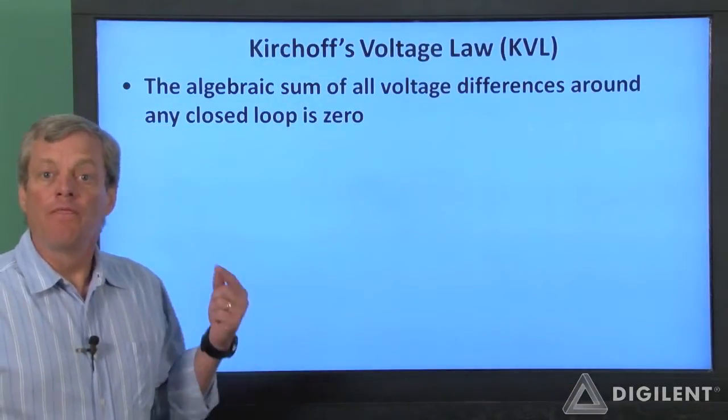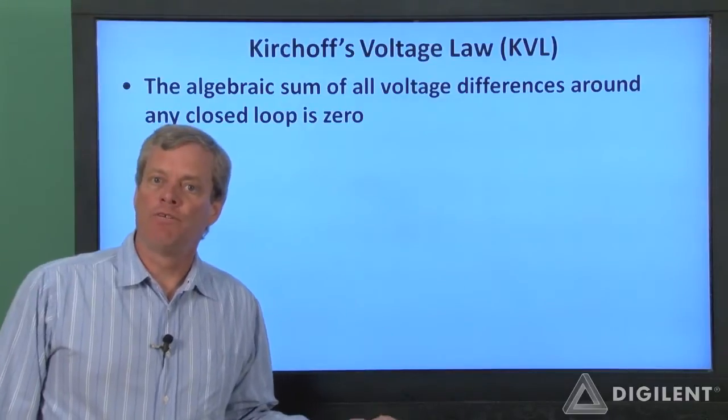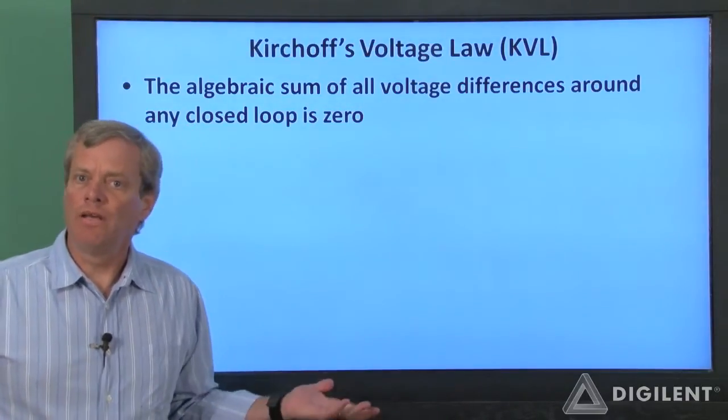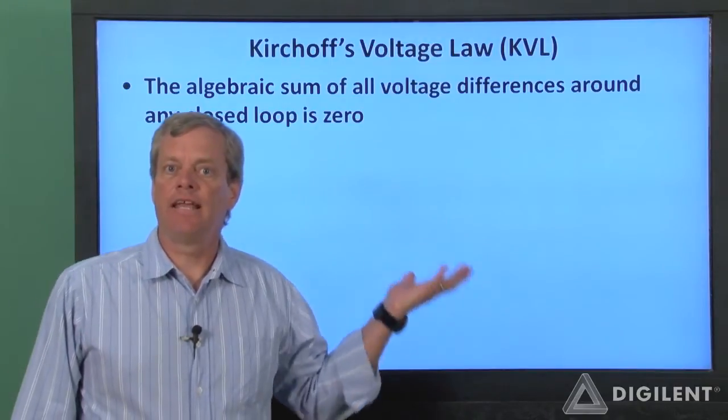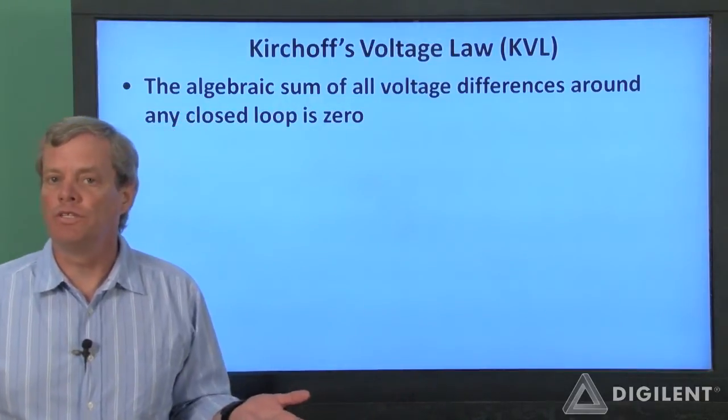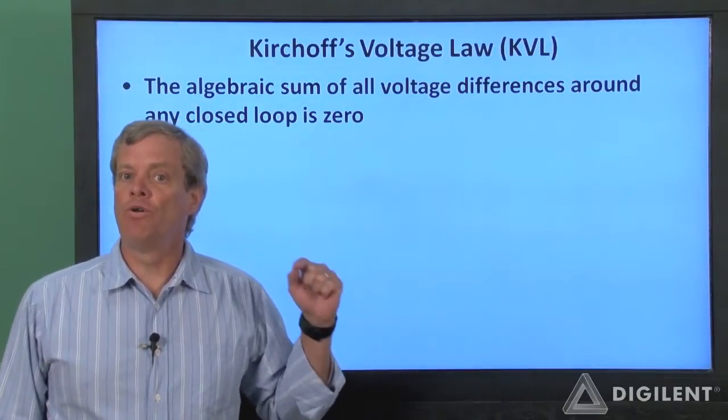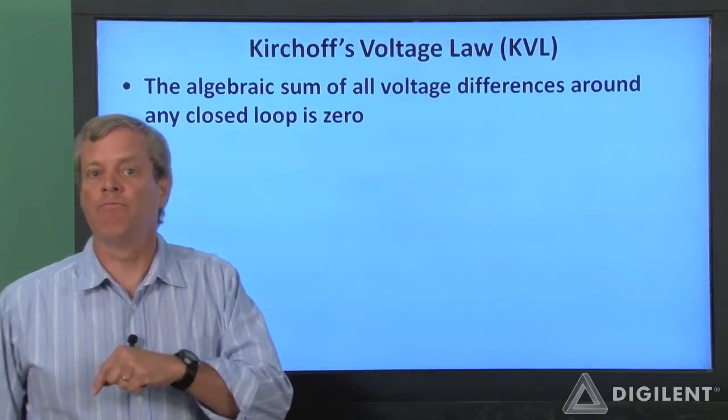Kirchhoff's voltage law is very simple. The sum of all the voltage differences around any closed loop is zero. Really, all that this is telling us is that any node just has one voltage. No matter what path we follow through the circuit, if we get back to our original node, we have to also get back to the same voltage.